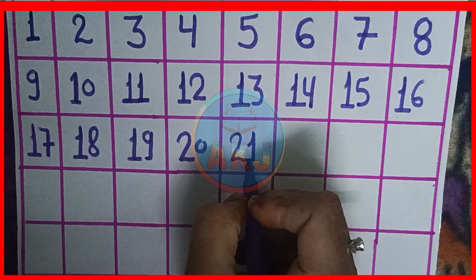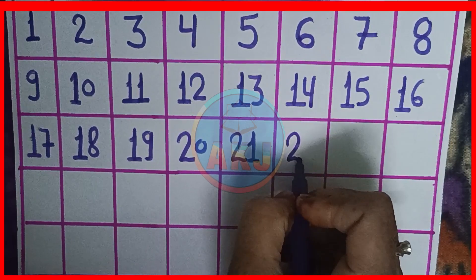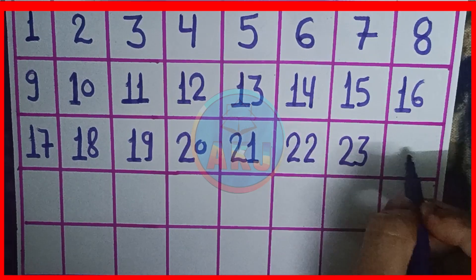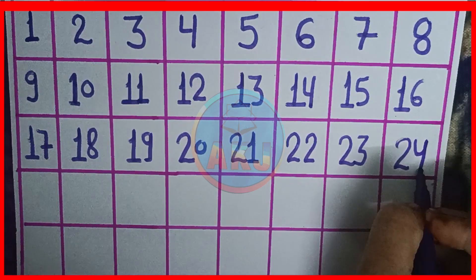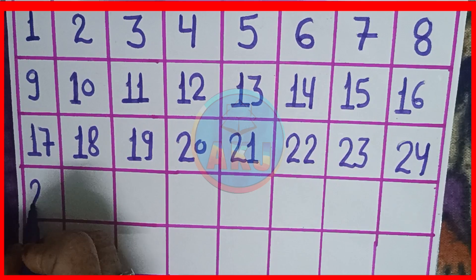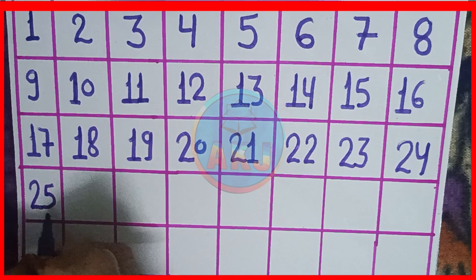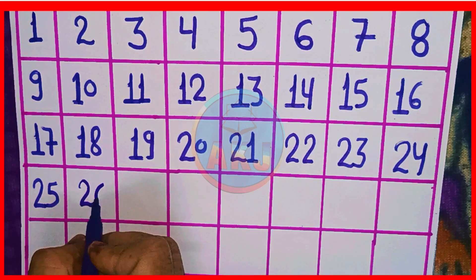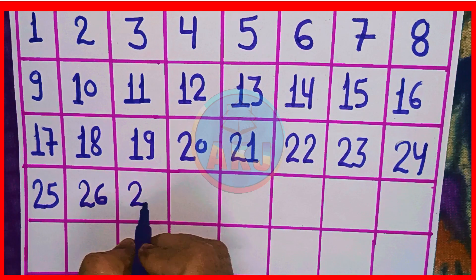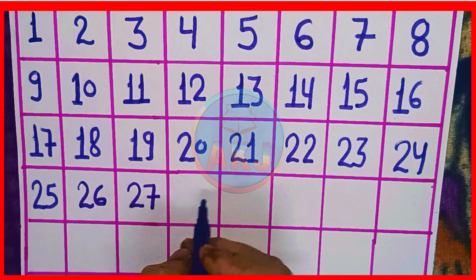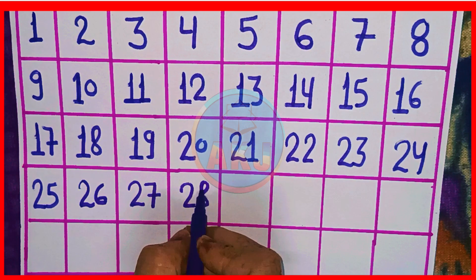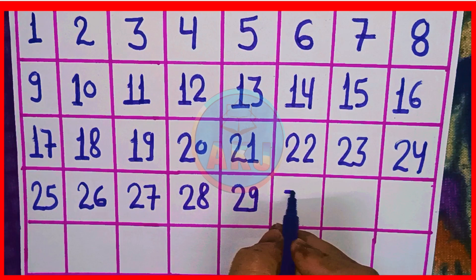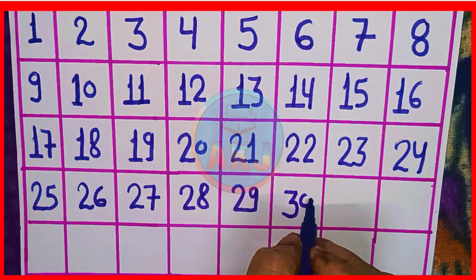2, 1, 21. 2, 2, 22. 2, 3, 23. 2, 4, 24. In the next line, 2, 5, 25. 2, 6, 26. 2, 7, 27. 2, 8, 28 and 2, 9, 29. 3, 0, 30.